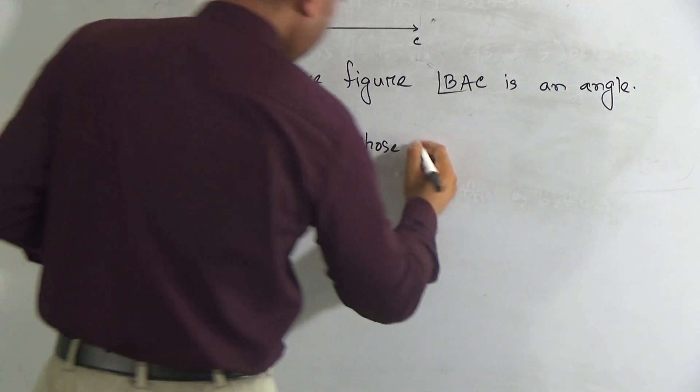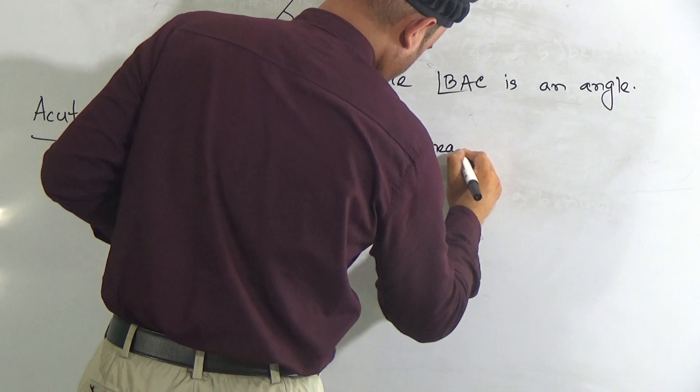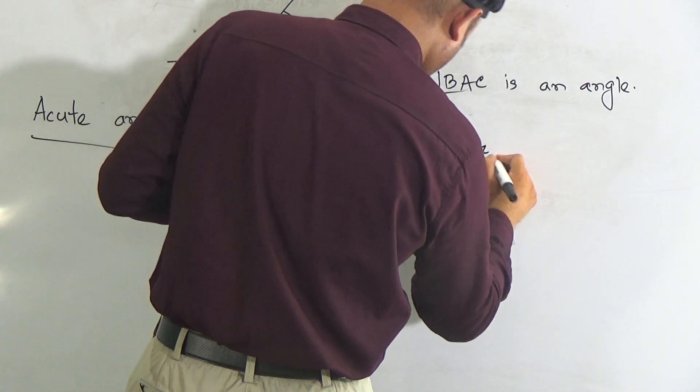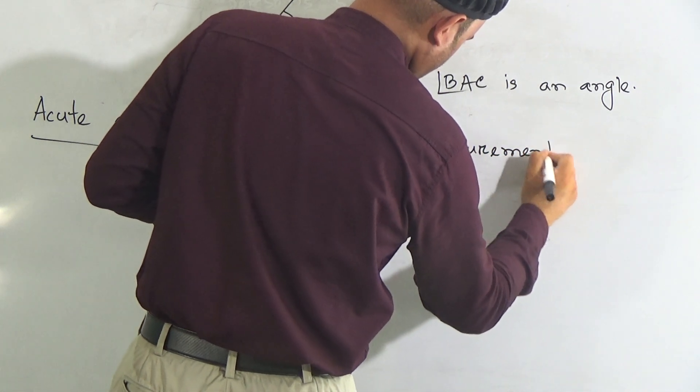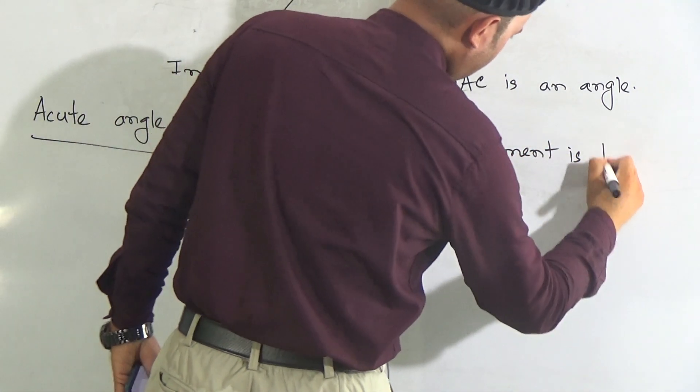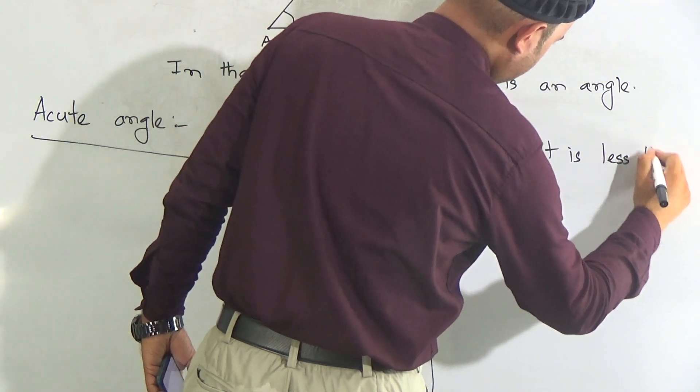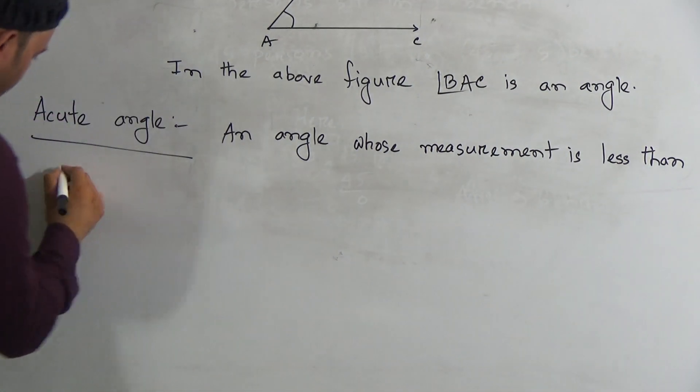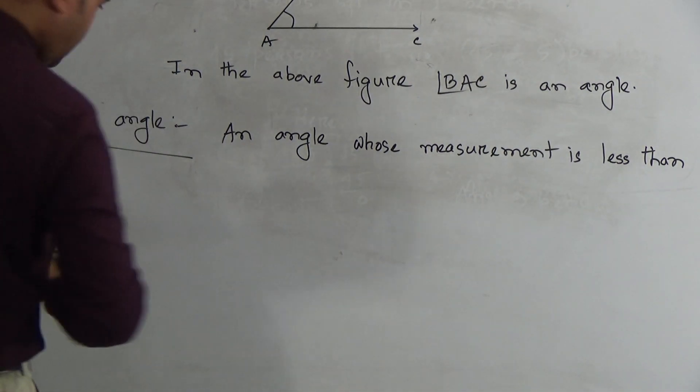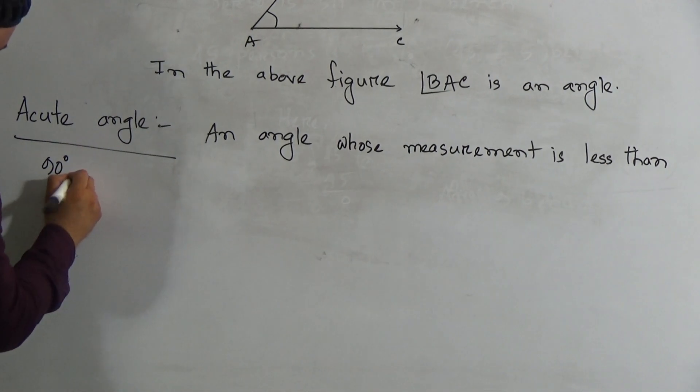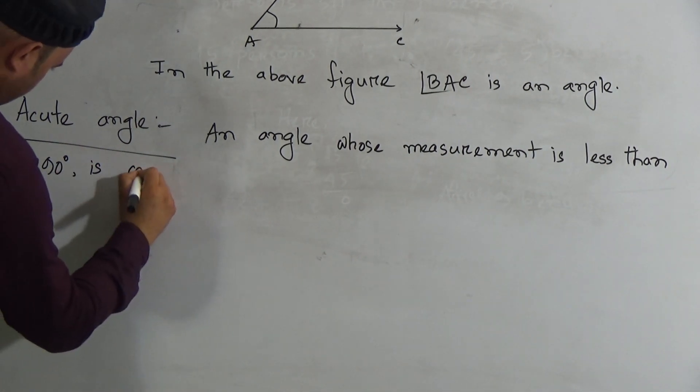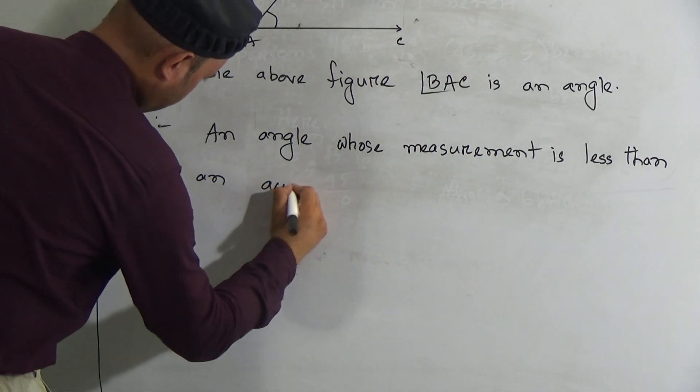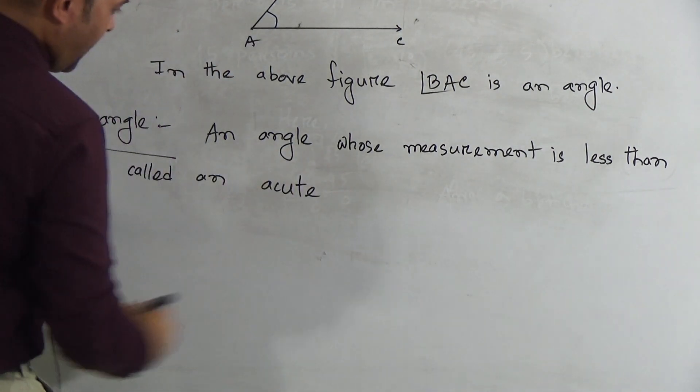Write the definition of acute angle: an angle whose measurement is less than 90 degrees is called an acute angle.